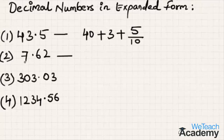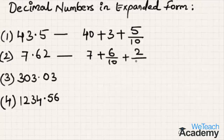Coming to the second example: the whole number part has 7 in units place, so we write it as 7. Plus 6 in the tenths place becomes 6 by 10. Plus 2 in the hundredths place becomes 2 by 100.